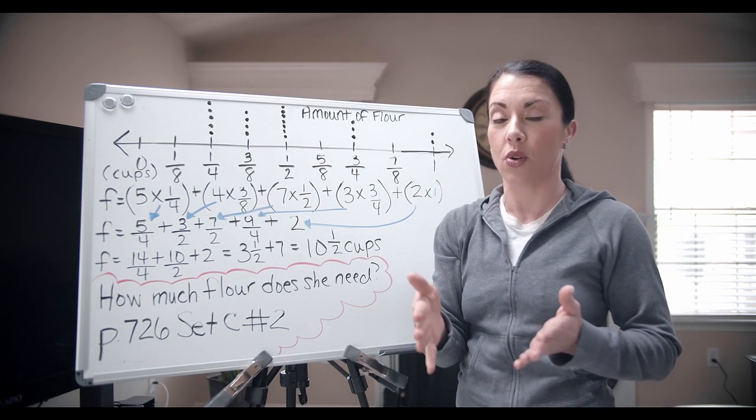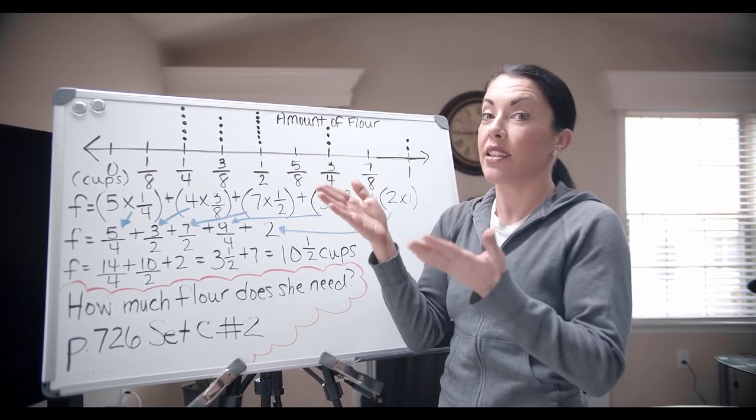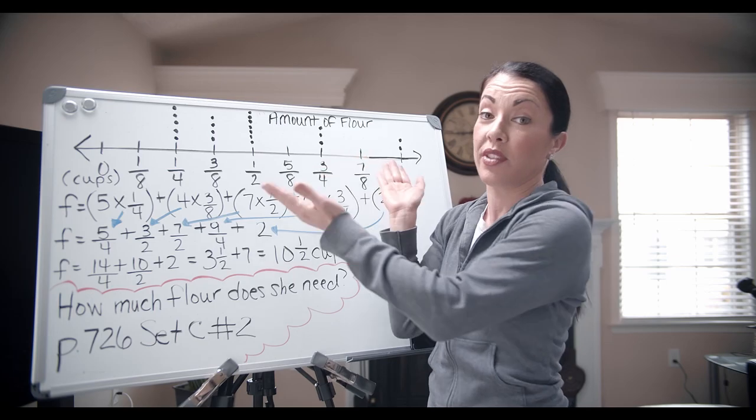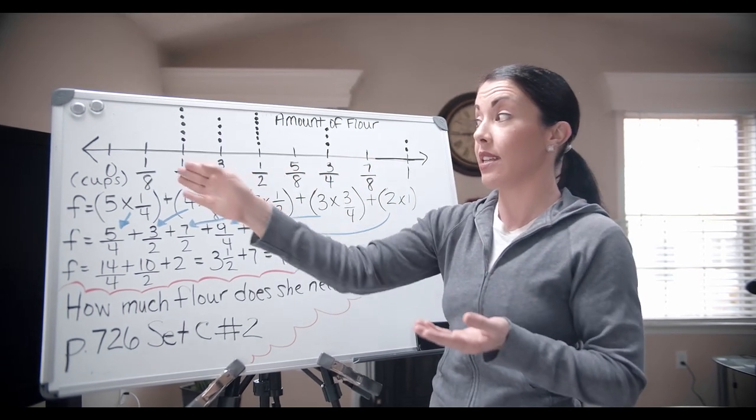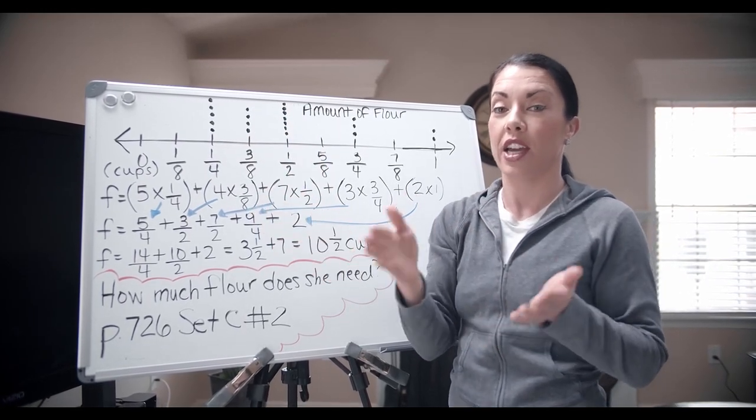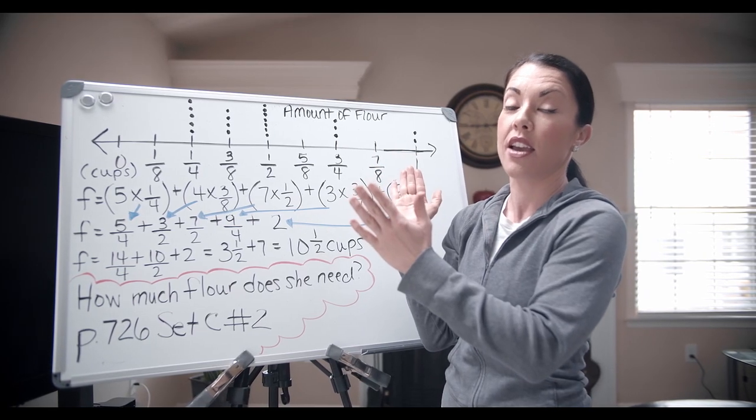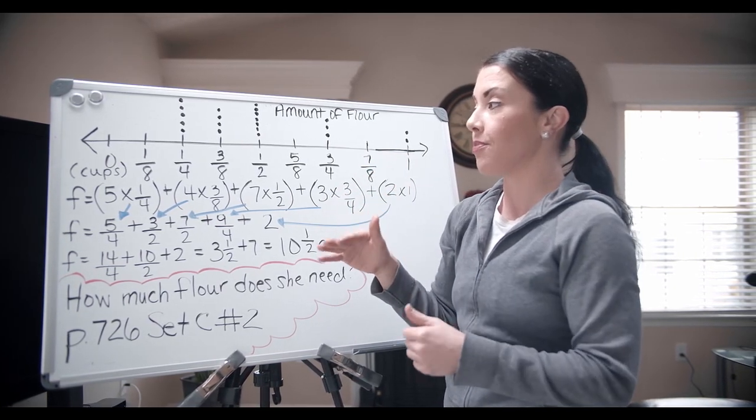So if you ever get stuck on questions like that, that's kind of a good strategy to use. Just think of it as eighths. Or if it was presented to you in sixteenths, take it as sixteenths. 1 sixteenths, 2 sixteenths, reduce if necessary. So I hope that helps clarify some questions that you had yesterday with missing fractions on a number line.